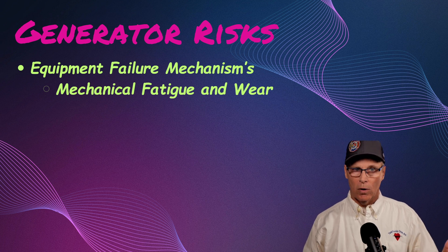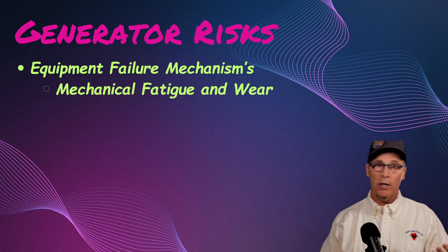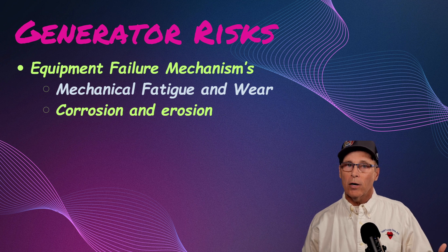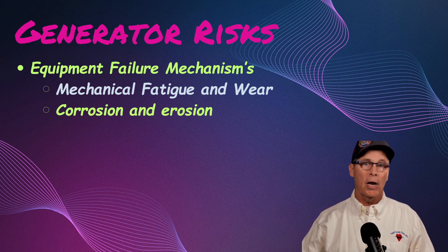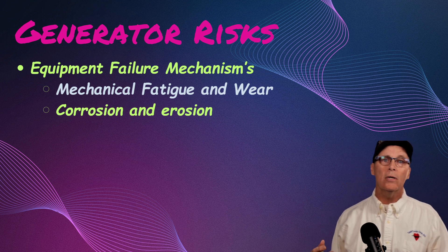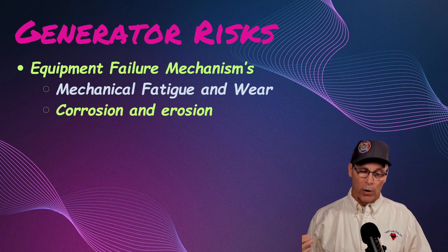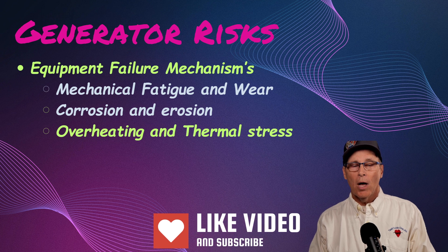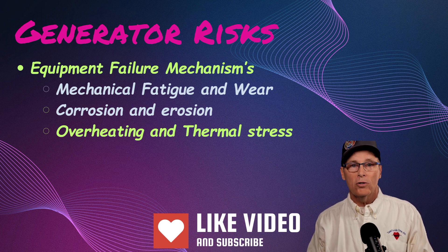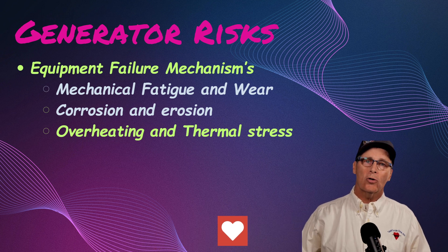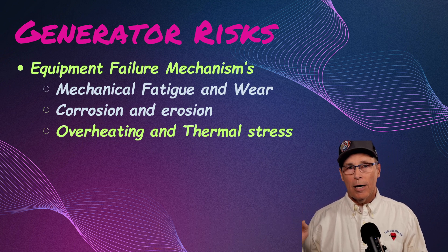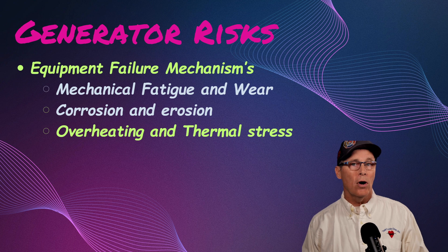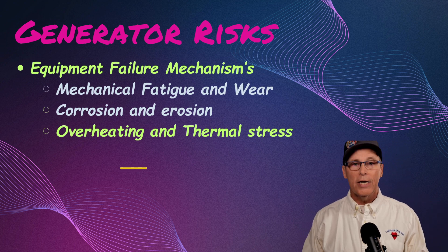Other causes of damage: mechanical fatigue and wear — every time units start up and shut down, they heat up and cool down and need to do so evenly. Corrosion and erosion — air-cooled units draw in lots of air, which can cause abrasion from dirty air, or corrosion from salt air near the ocean. Overheating and thermal stress — overloading a generator isn't common since most are sized for the generator step-up transformer, but in a chemical facility or refinery with on-site power generation, you can overload it.